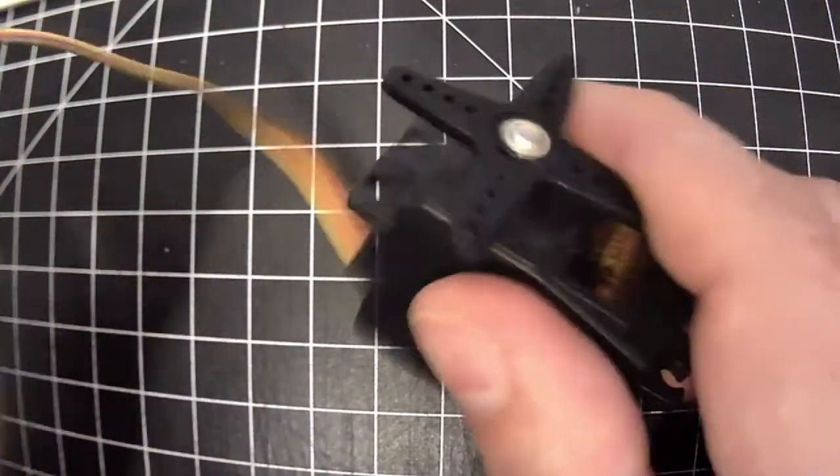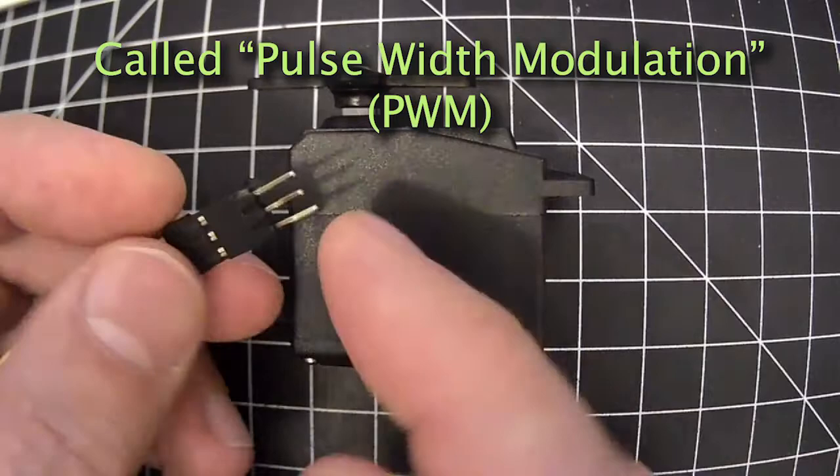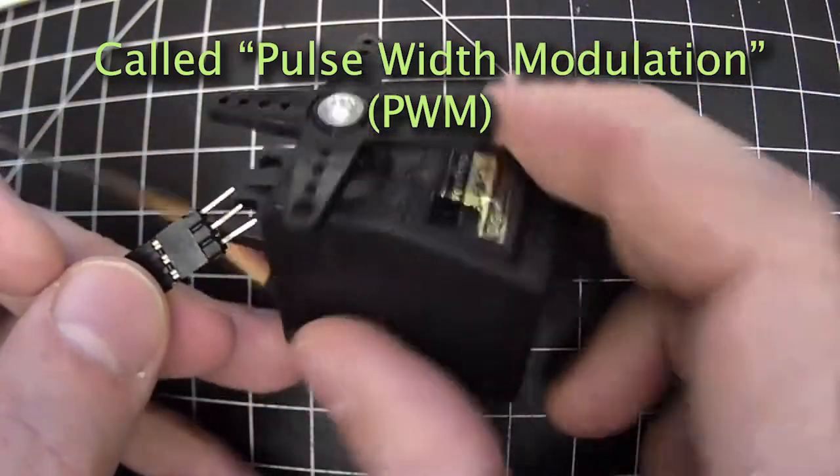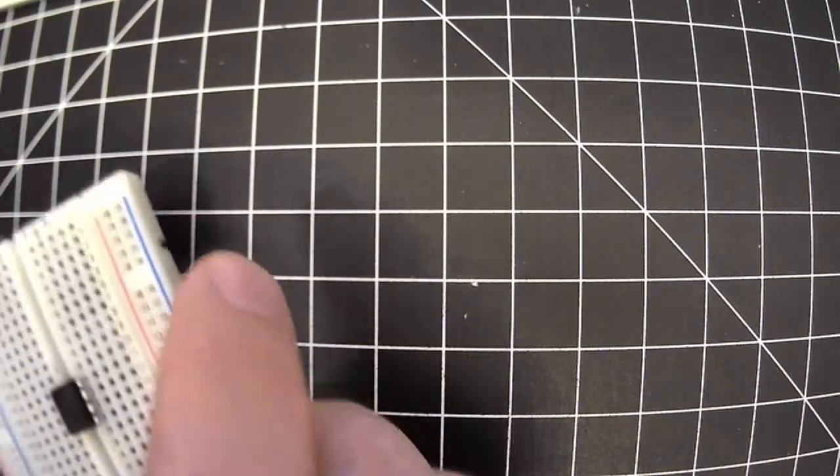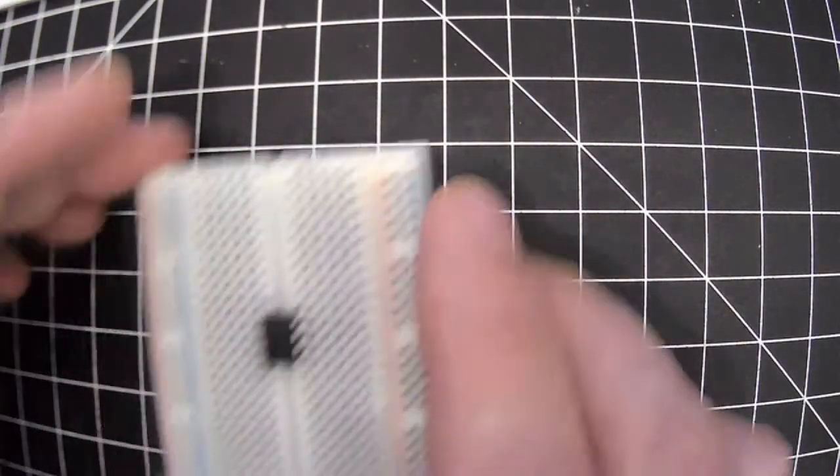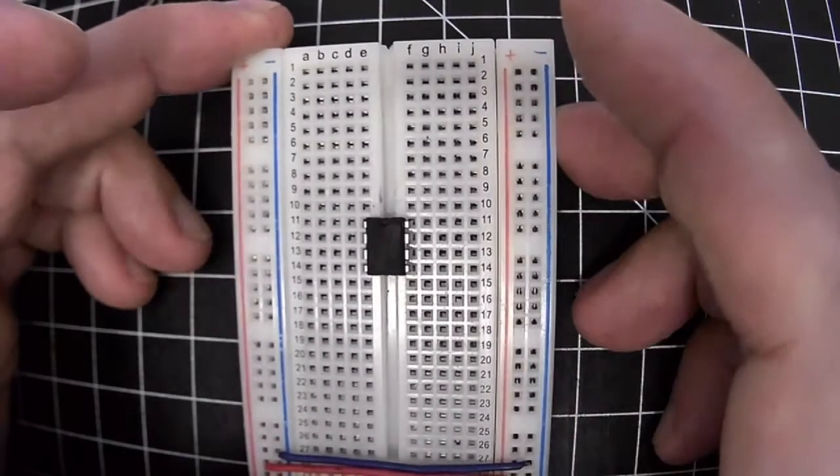And what happens is we give it a pulsed current and that pulsed current allows us to position the servo in a particular place. What can we use that could generate a timed pulse? And for that we're using the 555 timer chip.